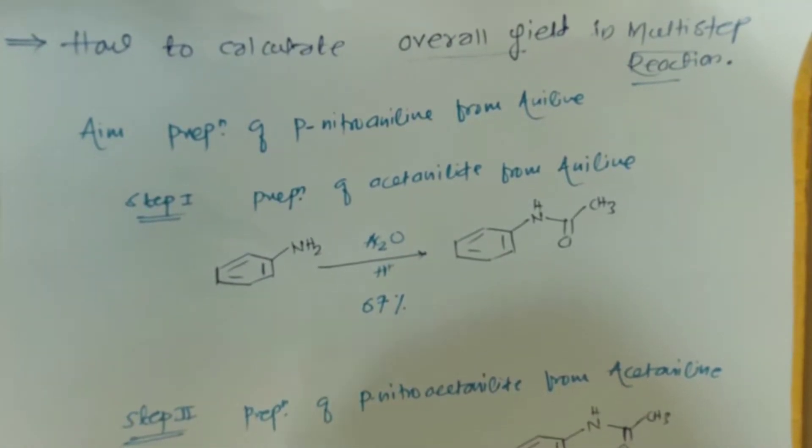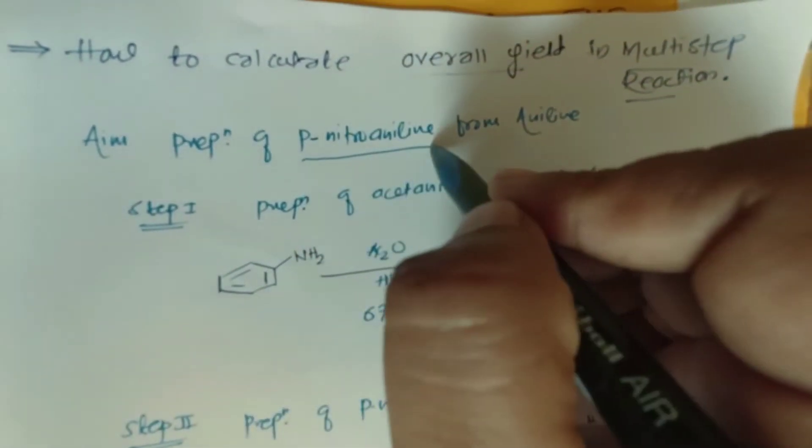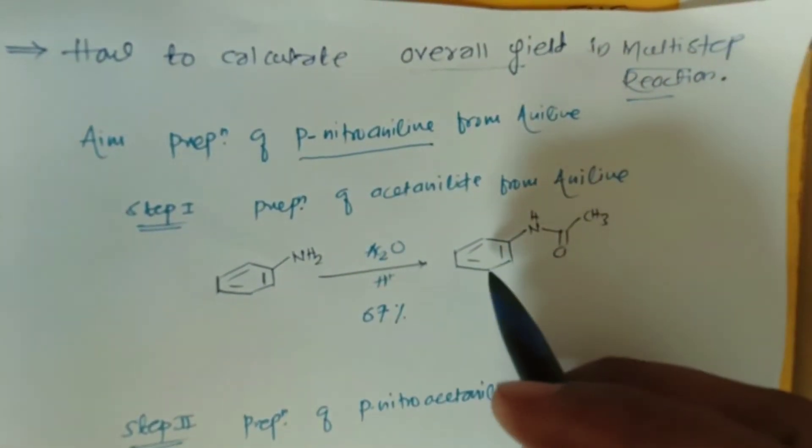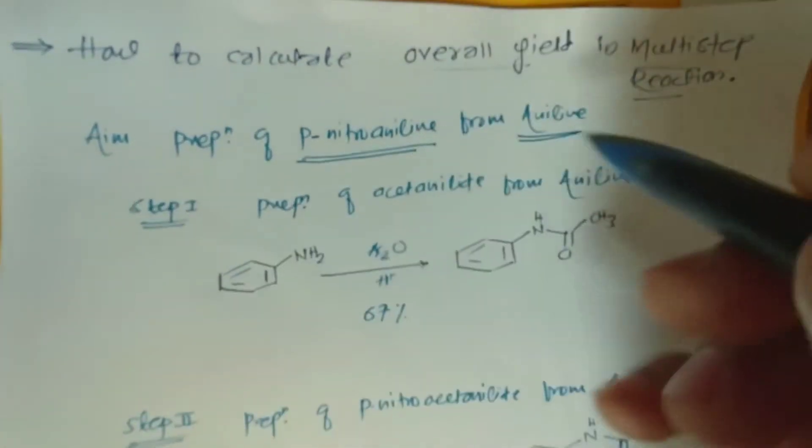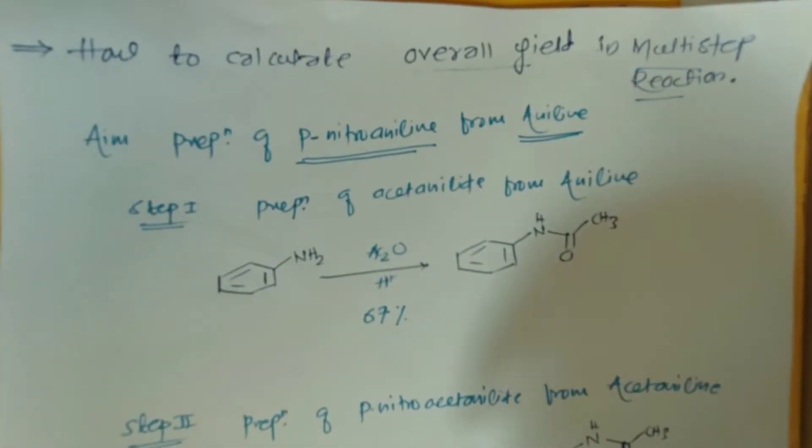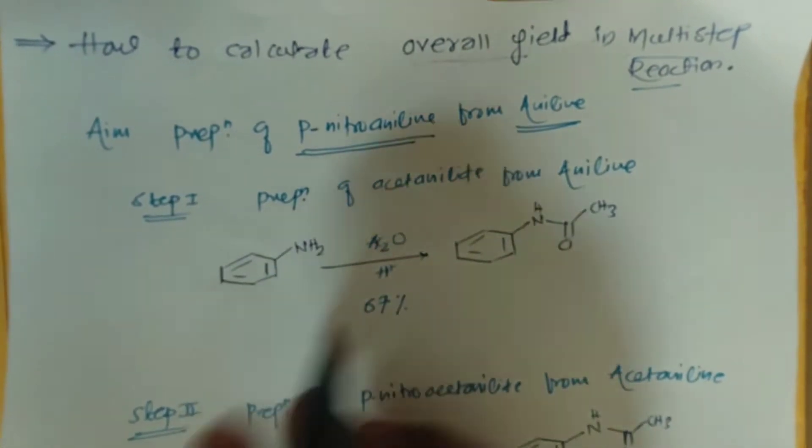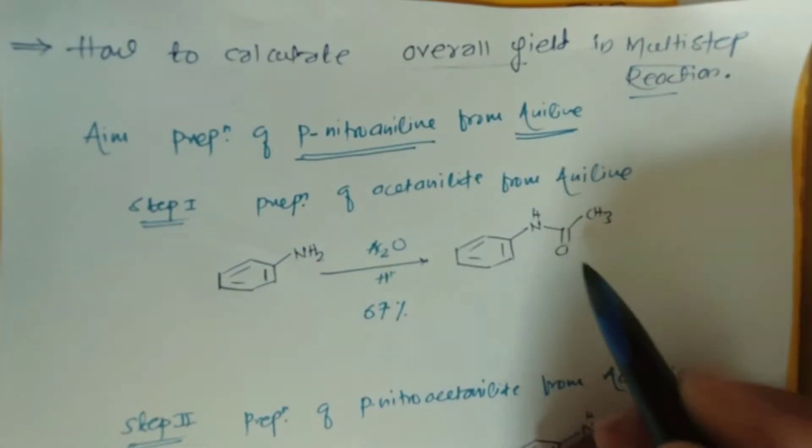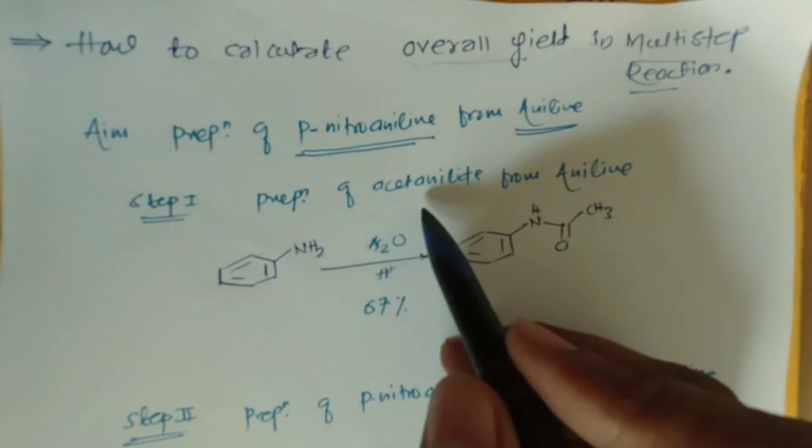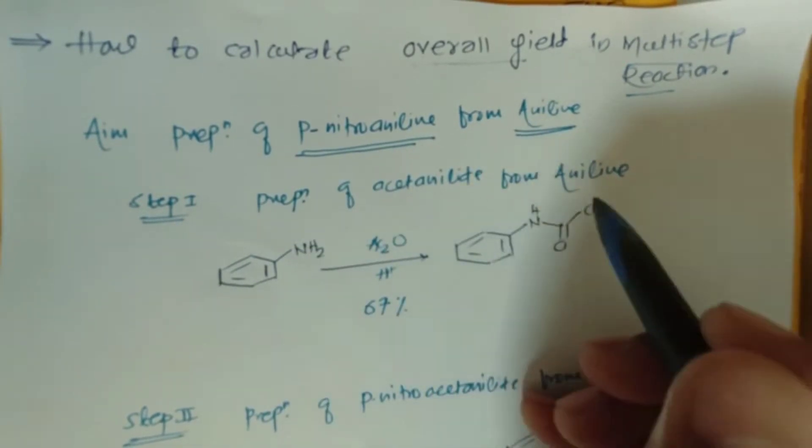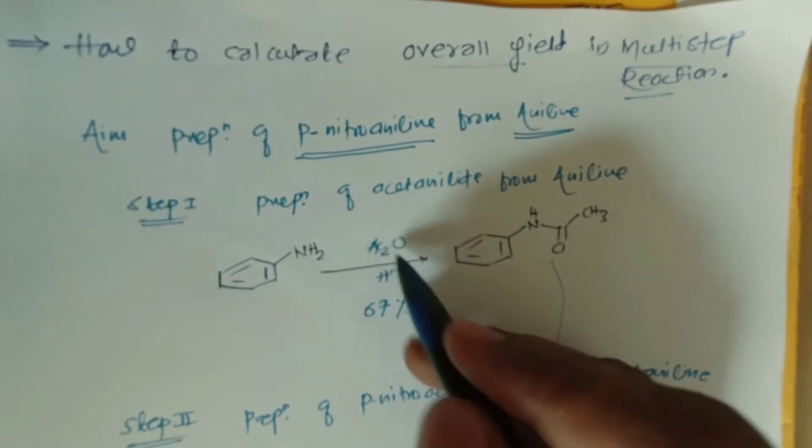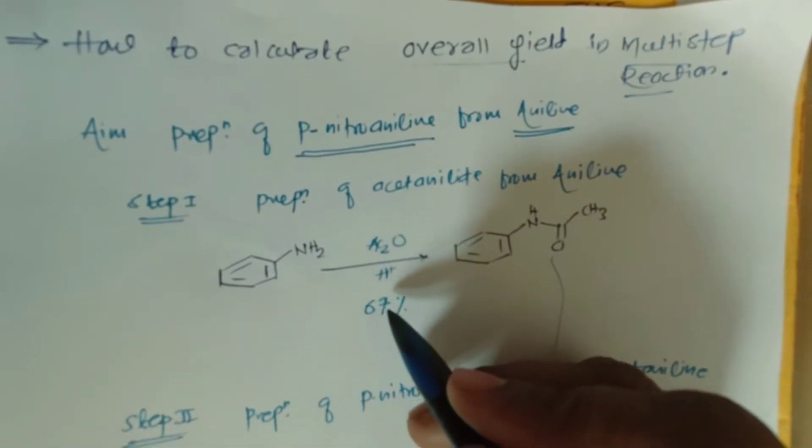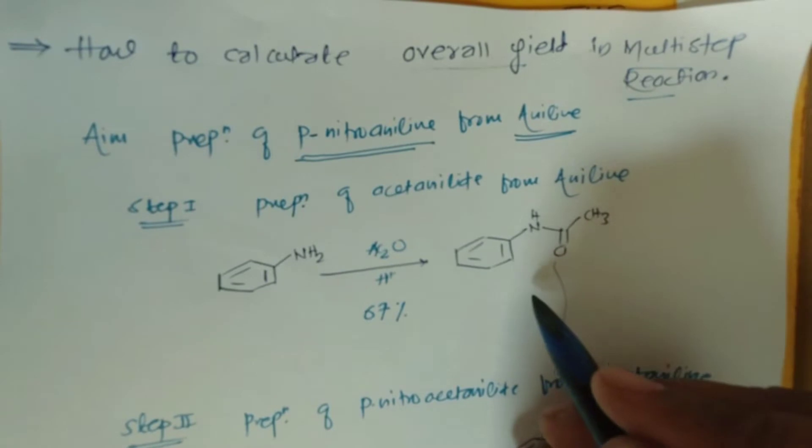This is the product, and from aniline we have to synthesize para-nitro aniline. In step one, aniline converts to acetanilide, so the first step is the preparation of acetanilide from aniline by acylation using acetic anhydride or acid chloride. It converts to acetanilide, and the yield of this reaction step is 67%.